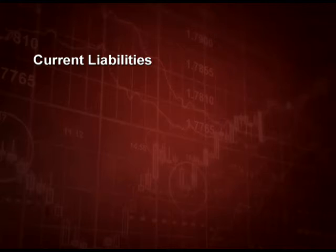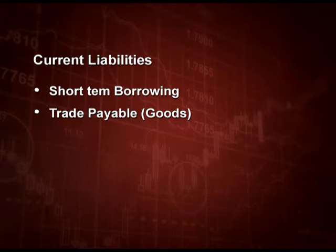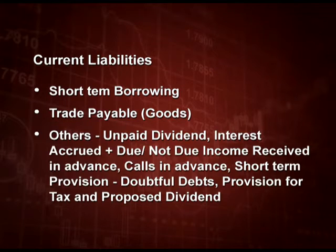The next topic is current liabilities on the liability side. These include short-term borrowings, trade payables for goods purchased on credit, and others such as unpaid dividend, interest accrued and due or not due, income received in advance, calls in advance, short-term provisions, doubtful debts, provision for tax, and proposed dividend. All these are current liabilities because they must be settled within 12 months.